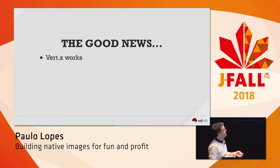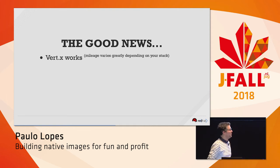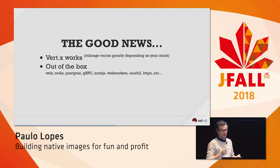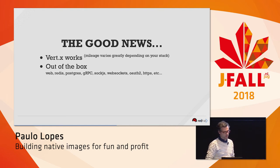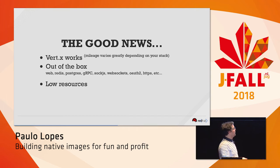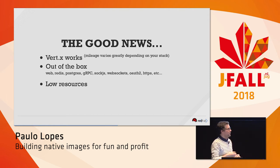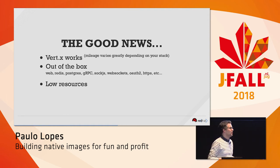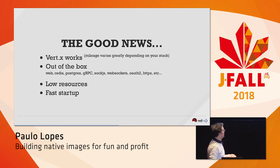There is also good news. If you're using Eclipse Vert.x, most stuff works — depending on the modules you're mixing. Out of the box you can get web servers, Redis, Postgres, gRPC — which is quite complex machinery — Sock.js, WebSockets, OAuth, HTTPS, and so forth. Once you build an application with Vert.x using all these things, you'll notice it uses low resources: just a few megabytes of memory and a few megabytes of disk space, instead of a full JDK which averages around 150 MB. And of course, you have fast startup.